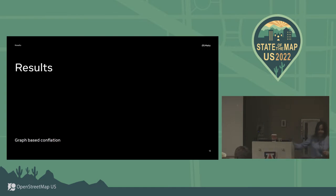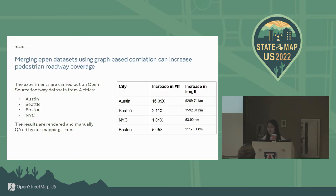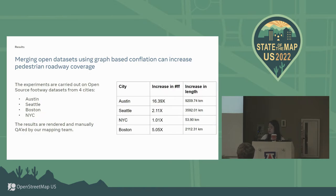Thanks Ezra. Before getting into example results, we applied experiments on four cities with open-source footway datasets: Austin, Seattle, Boston, and NYC. Our mapping team curated the conflated data to assess quality and map rendering, leading to improvements in the completion process. By merging the open datasets with OSM data using the graph-based completion process, we were able to increase footway coverage up to 16 times per city and increase thousands of kilometers in length per city.